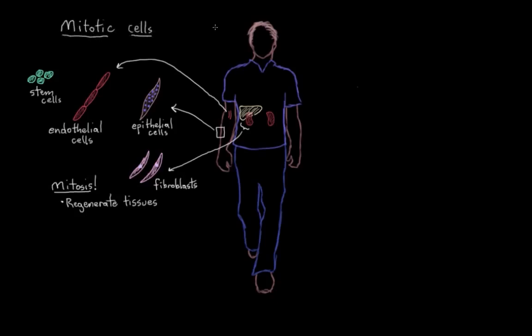We also have another group of cells in our bodies that we refer to as post-mitotic cells. They don't undergo mitosis. They're incapable of proliferation.